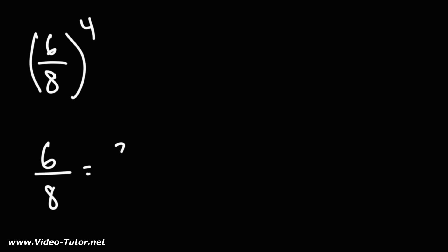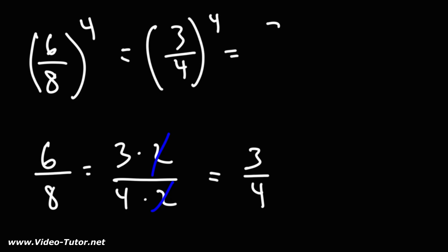6 is 3 times 2, 8 is 4 times 2. So you could cancel a 2. 6 over 8 is the same as 3 over 4. So we can write this as 3 over 4 to the fourth power. So this becomes 3 to the fourth over 4 to the fourth.